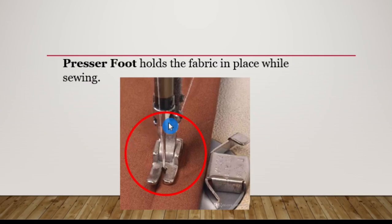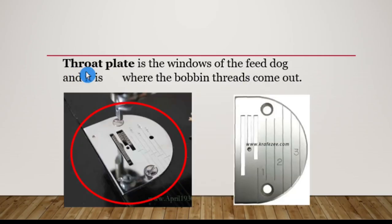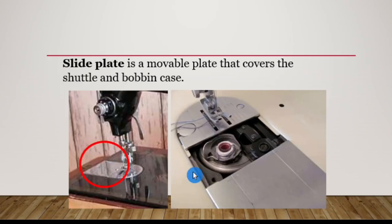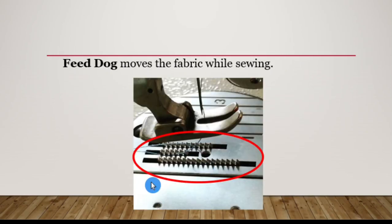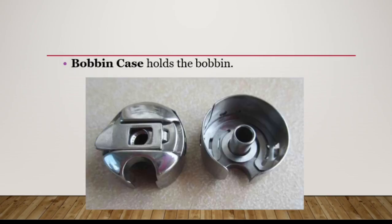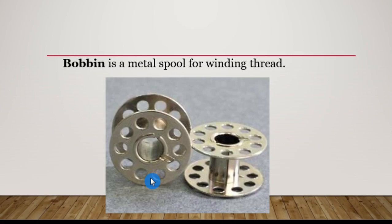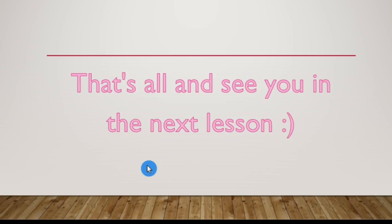The presser foot holds the fabric in place while sewing. The throat plate serves as the window of the feed dog and it is where the bobbin thread comes out. The slide plate is a movable plate that covers the shuttle and the bobbin case. The shuttle is where the bobbin case is placed. The feed dog moves the fabric while sewing. The bobbin case holds the bobbin in place, and the bobbin is a metal spool for winding thread. That's all — see you in the next lesson. God bless and always keep safe, everyone.